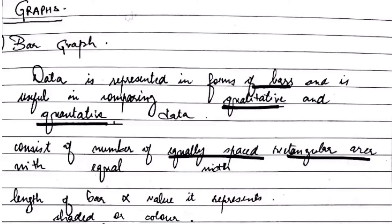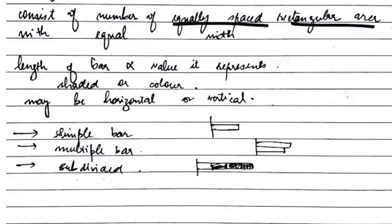Let's start with bar graph. In a bar graph, we represent the data in bars and it is useful in comparing. The bar graph consists of a number of equally spaced rectangular areas with equal width. The bar graph can be horizontal or vertical.